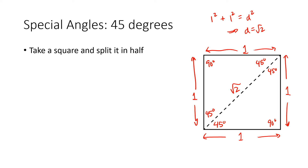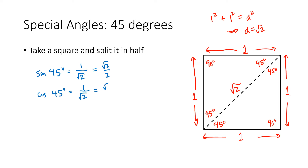Using the bottom half of the triangle, the sine of 45 degrees is opposite over hypotenuse, which is one over the square root of two — or, rationalizing the denominator, the square root of two over two. The cosine of 45 degrees is also adjacent over hypotenuse, one over the square root of two, which again can be written as the square root of two over two. The tangent of 45 degrees is opposite over adjacent, one over one, which works out to be one. We can figure out the other three trig functions easily using our identities.